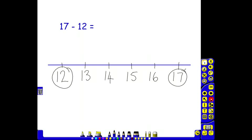They're then looking for the difference between those numbers. 17 take away 12. We've now got to find the difference, so we count up: 1, 2, 3, 4, 5. So the difference is 5, so 17 take away 12 is 5.